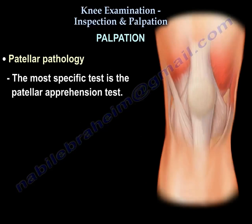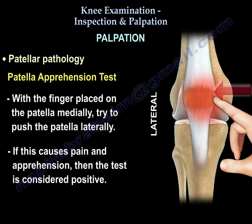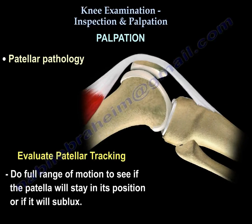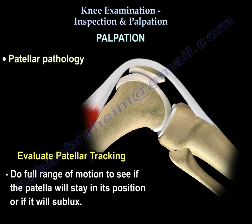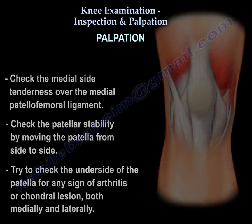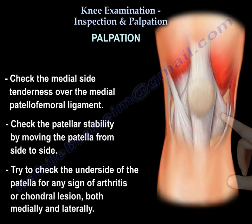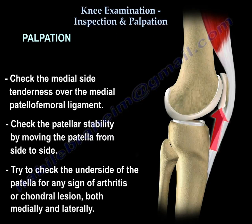For patellar pathology, the most specific test is the patellar apprehension test — push the patella laterally and if this causes pain and apprehension, the test is positive. Evaluate patellar tracking through full range of motion to see if the patella stays in position or subluxes. Check medial side tenderness over the medial patellofemoral ligament, patellar stability side to side, and the undersurface of the patella for arthritis or chondral lesions both medially and laterally.